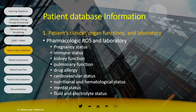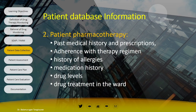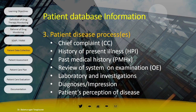Patient pharmacotherapy information includes medical history, medication history, adherence, drug levels, and drug treatment in the ward. Patient disease process information includes chief complaint, history of present illness, past medical history, and so on. Importantly, as a pharmacist, we should also collect the patient's perception towards their disease, because perception towards disease is related to adherence to medicine. Once you collect the patient database, we proceed to patient assessment, which involves determining the presence of medication-related problems.